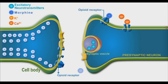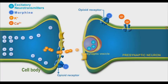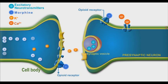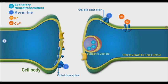Binding of opioids to their postsynaptic receptors significantly enhances the potassium efflux and hyperpolarization process. This leads to a significant suppression of pain signal transportation and sensation.